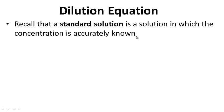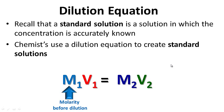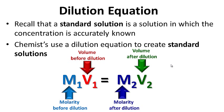This brings us to the dilution equation. Recall that a standard solution is one in which the concentration is accurately known — one molar, two molar, three molar. Chemists use the dilution equation: M1V1 = M2V2, where M1 is molarity before dilution, V1 is volume before dilution, M2 is molarity after dilution, and V2 is volume after dilution.